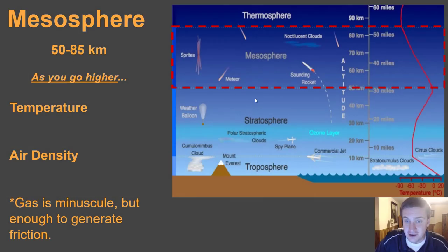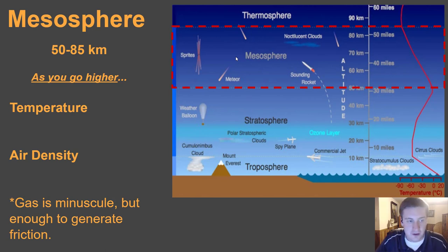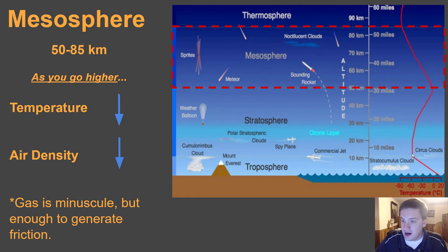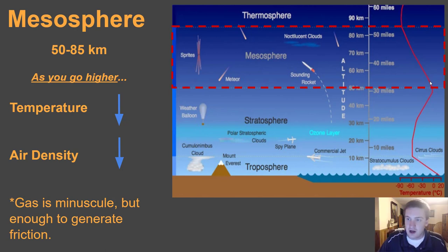We've left the stratosphere and are now entering the mesosphere, between 50 and 85 kilometers. The mesosphere is pretty simple regarding temperature and air density: air density goes down, and much like the troposphere, temperature also goes down. The heat source in the troposphere is the ground surface, and as you remove yourself from that heat source temperature decreases. In the stratosphere temperatures go back up due to the ozone layer, but what marks the boundary between the stratosphere and mesosphere is where you're no longer feeling that warming effect. As you get into the mesosphere, temperatures decrease again with altitude. The gas here is pretty minuscule but it is enough to generate friction, which is important.